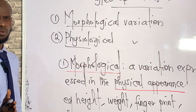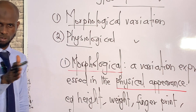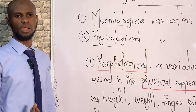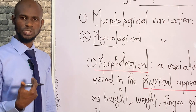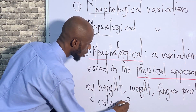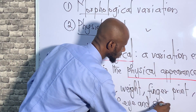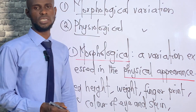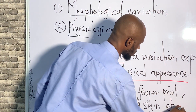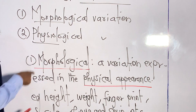What about color? We have the color of the eye and the color of the skin. When you look at someone in their physical appearance, you can differentiate between their colors — the color of the eye and the color of the skin, et cetera.